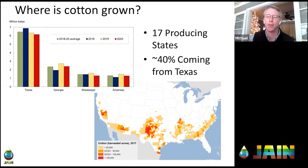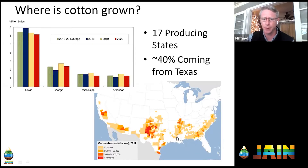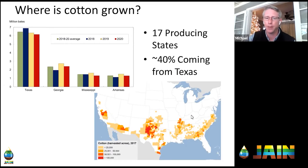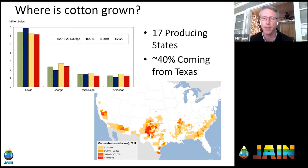Where do we grow cotton now? A lot of people would say the Southeast — Mississippi, Alabama, Georgia. That is true, and there's a lot grown in Georgia. But about 40% of the cotton we produce in the U.S. comes out of Texas. Our farm was in the northeast corner of Louisiana, and we grew a lot of cotton there through the 20th century. But when cotton got to 40–50 cents in the 2000s, a lot of us didn't have enough acres to make it work, and you've seen cotton acreage pull out of the Mississippi River Delta.